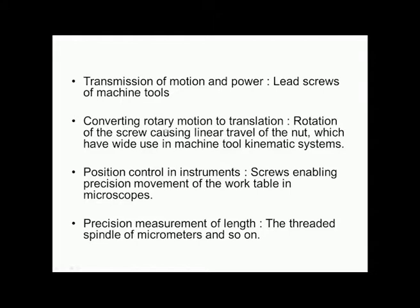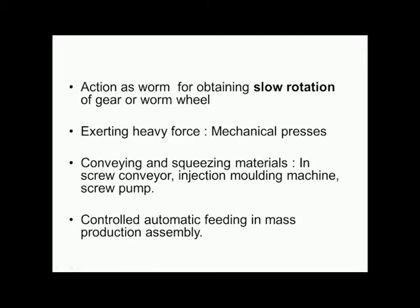Screw threads are used for converting rotary motion to translation — that is, rotation of the screw causes linear travel of the nut, which has wide use in machine tool kinematic systems. Screw threads are used for position control in instruments; the threaded spindle of a micrometer is an example. To get very slow rotation, screw threads are used as in the example of gear and worm wheel.